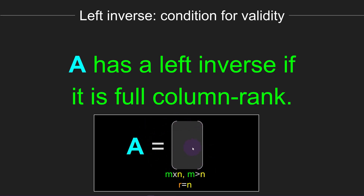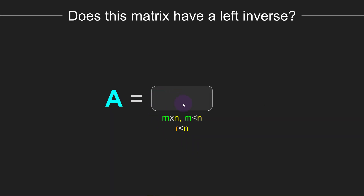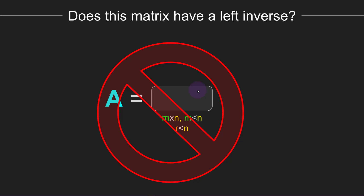This is for a tall matrix where m is larger than n. What about a wide matrix? Does a matrix with that shape have a left inverse? The answer is no, it cannot. Because the rank has to be less than n — this matrix can never have full column rank. So A transpose A cannot be full rank, and this matrix does not have a left inverse.